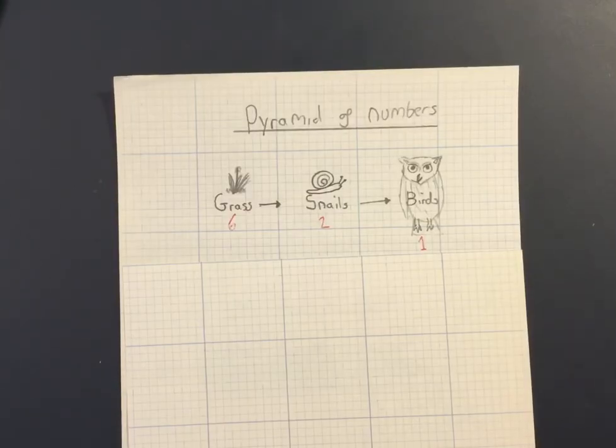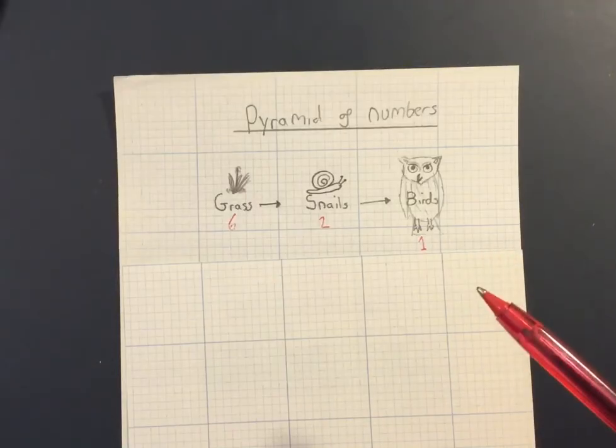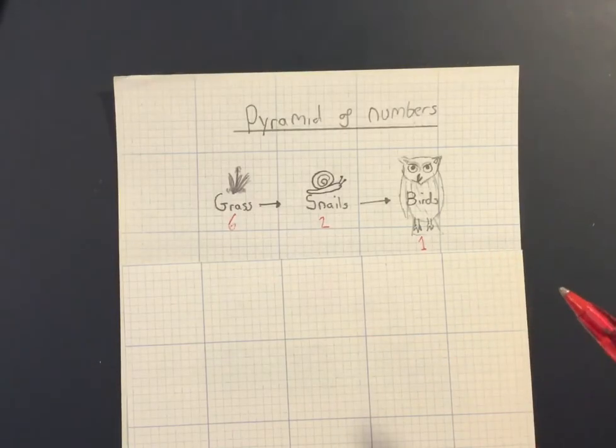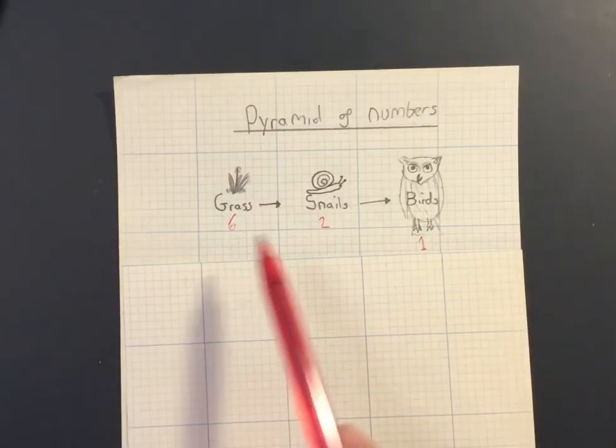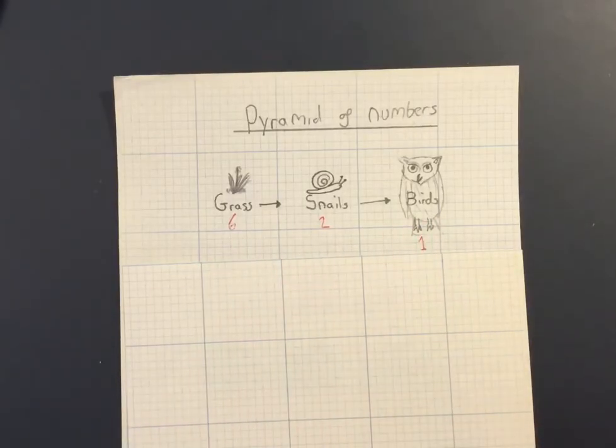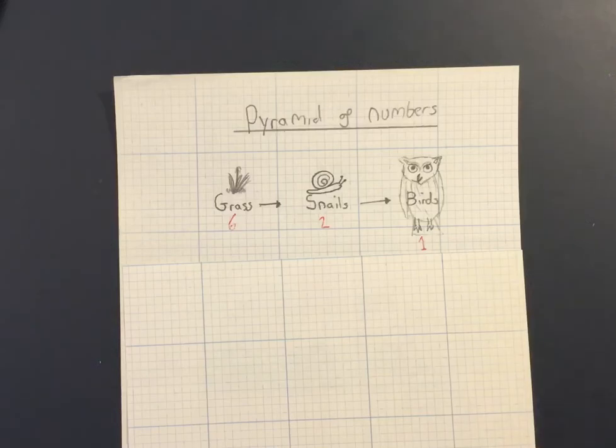So you've already learned a little bit about food chains and food webs, and pyramids of numbers or stacks of numbers are a good way to convert a food chain like this one we see here into a graphical representation, a way we can see how many organisms are at each level of that food chain, each trophic level.